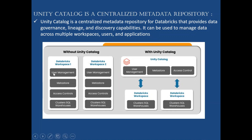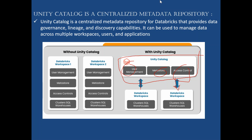Unity Catalog can be used to manage data across multiple workspaces, users, and applications. Earlier, for each Databricks workspace, we handled users, metadata, access, and clusters individually. Now with Unity Catalog, you have one centralized place to control all users, metadata, and access control. All workspaces will have the same rules and same permissions, making it very helpful for organizations to manage users, metadata, and permissions at one place.